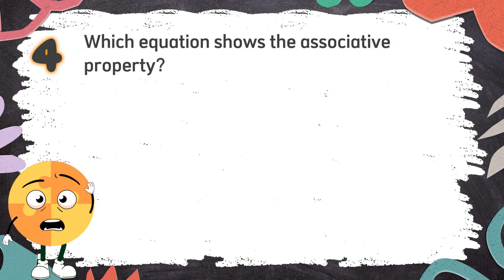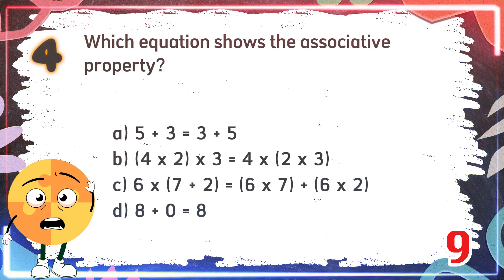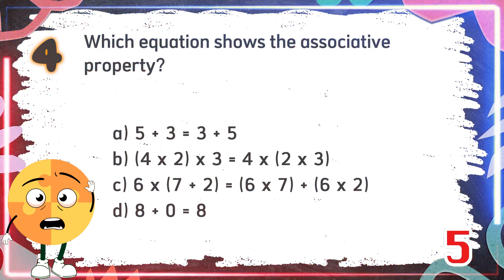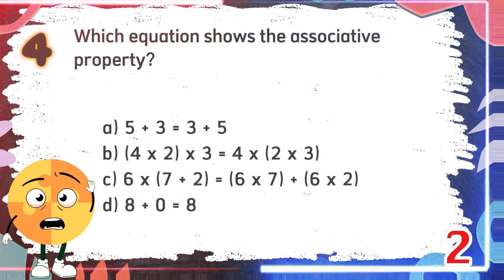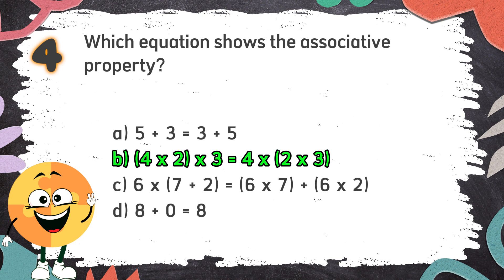Number 4: Which equation shows the associative property? Again, which equation shows the associative property? The choices are: A. 5 plus 3 equals 3 plus 5. B. The product of 4 and 2 multiplied by 3 equals 4 times the product of 2 and 3. C. 6 times the sum of 7 and 2 equals the sum of the product of 6 and 7 and the product of 6 and 2. D. 8 plus 0 equals 8. The correct answer is B: the product of 4 and 2 multiplied by 3 equals 4 times the product of 2 and 3.